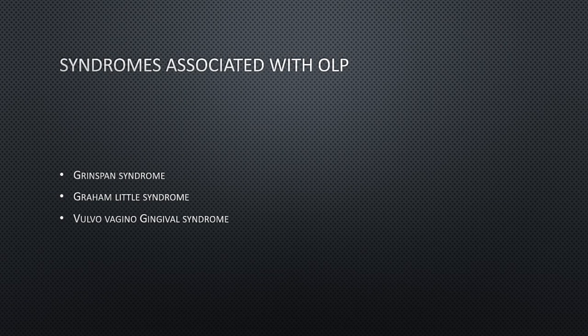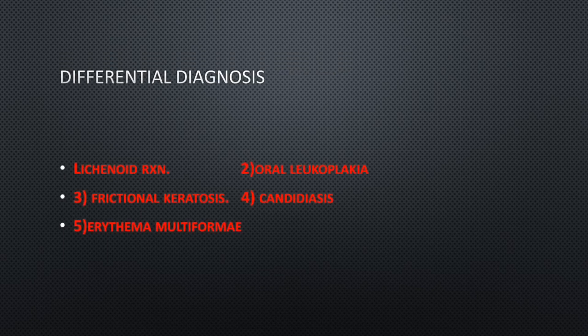Oral lichen planus is associated with several syndromes. Grinspan syndrome involves diabetes mellitus and hypertension alongside lichen planus. Graham-Little syndrome involves loss of hair from the scalp, axilla, and groin region. Vulvovaginal-gingival syndrome affects the vaginal and gingival areas.